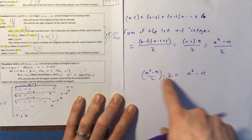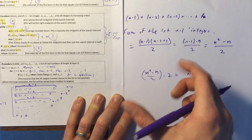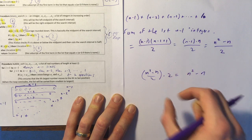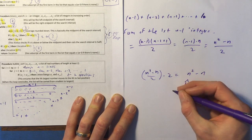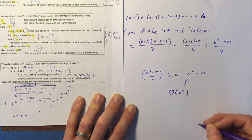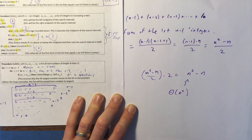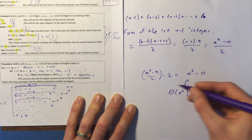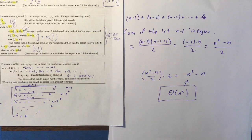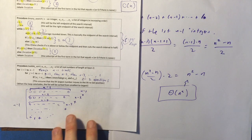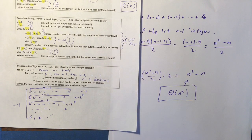The point here is that this is big O of n squared — it's big theta of n squared, in fact. So the focus here is on the order, and this bubble sort has complexity of n squared. It's big O of n squared.